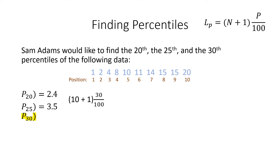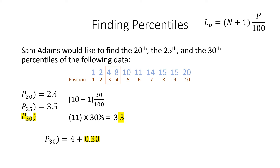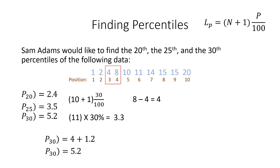Now we will calculate the 30th percentile. We take our n plus 1 and multiply it by 30 over 100 — the same as 11 times 30 percent, which gives us 3.3. 3.3 is somewhere between the third and fourth position. We will take the number in the third position, 4, and use it to start our work. We add our decimal 0.3 and multiply it by the difference between our numbers in the fourth and third position: 8 minus 4. 0.3 times 4 gives us 1.2. We then add this 1.2 to our original number in the third position: 4 plus 1.2 gives us 5.2. The 30th percentile is 5.2.